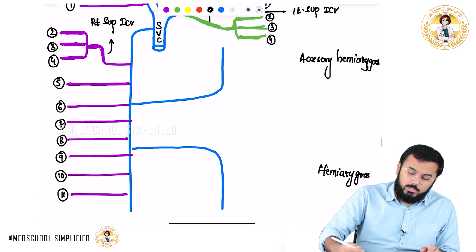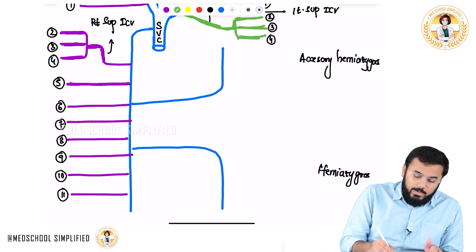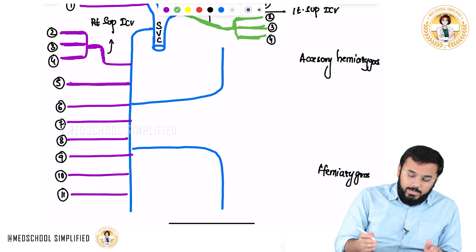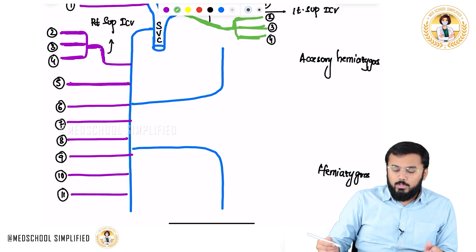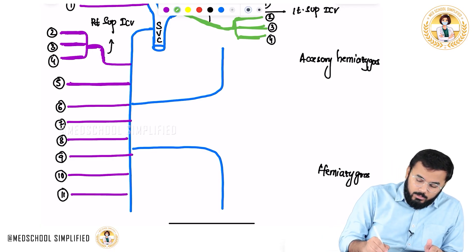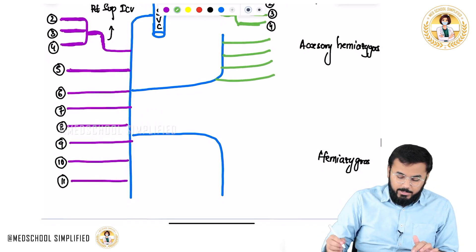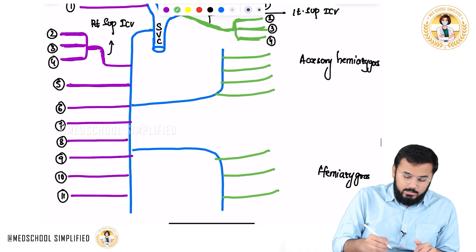On the left side, the arrangement is very important. Branches five, six, seven, and eight on the left side drain into the accessory hemiazygous. The remaining branches — nine, ten, and eleven — drain into the hemiazygous.